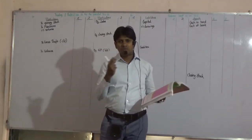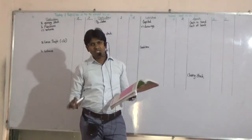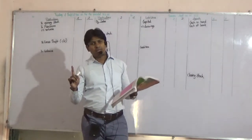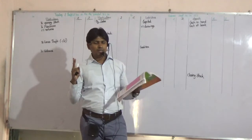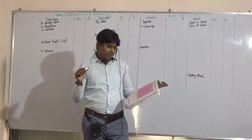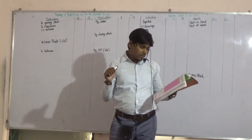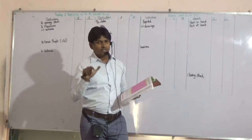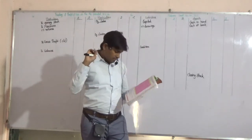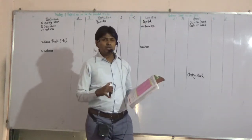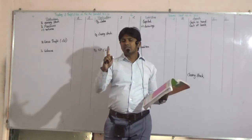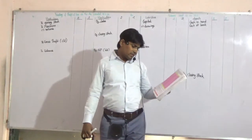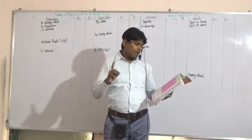Closing stock is 7,100 and 7,500 — we are going to take whichever is less. Traveling expenses include $125 spent on personal travelling, so we are going to take that to capital as drawings. 175 are to be written off as bad debts due from Mr. Ashok, and 5% RDD. We have debtors at 3% and creditors at 1%. Provide 10% depreciation on plant and machinery and furniture.